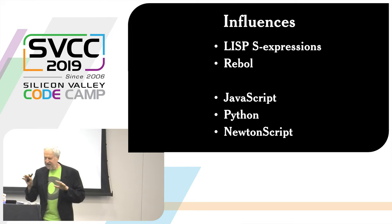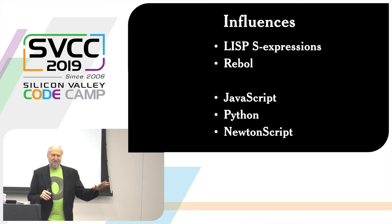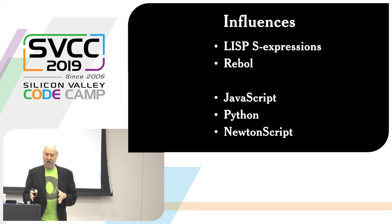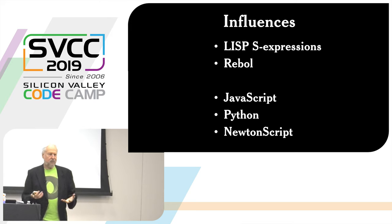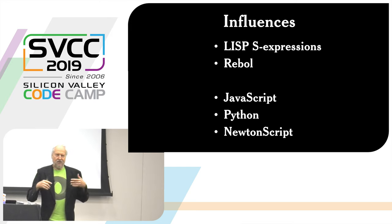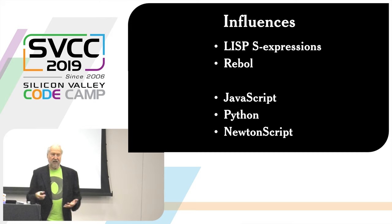JavaScript, Python, and NewtonScript — nobody remembers NewtonScript, but it was a big thing in the Newton. All three of these languages were designed about the same time, and the inventors weren't aware of each other, but they all put the same notation in it for creating objects with fields and properties and arrays. That spontaneous invention in multiple places is indication that this is a natural thing that was going to happen inevitably.